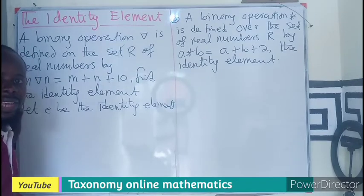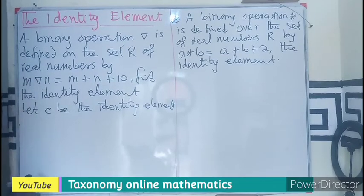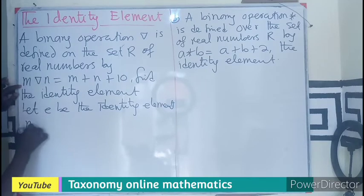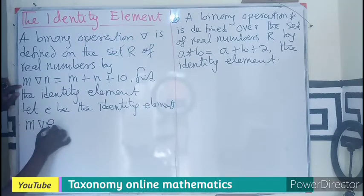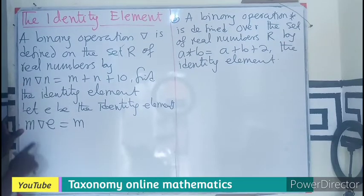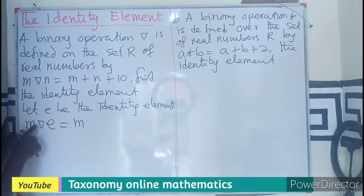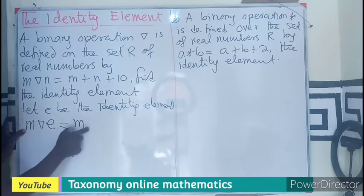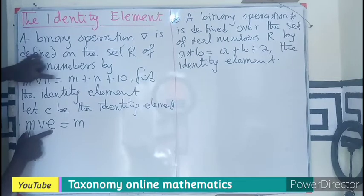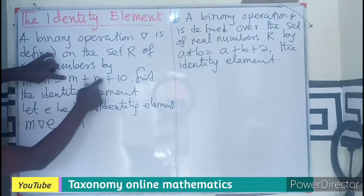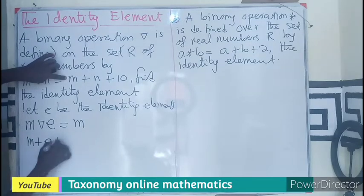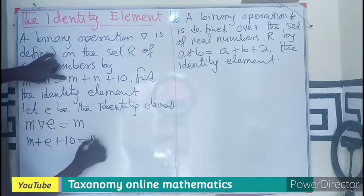Let E be the identity element. That simply means that if I take my operator M, I should have M star E equals M. If I take M operated on E, which is the identity element, I should be having M. But this operator is being defined in terms of M plus N plus 10. So I have M plus E plus 10 equals to M.